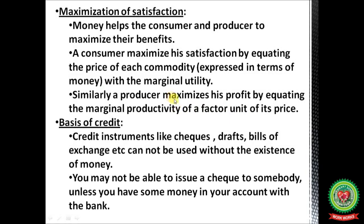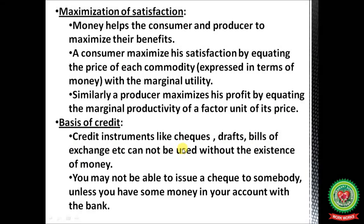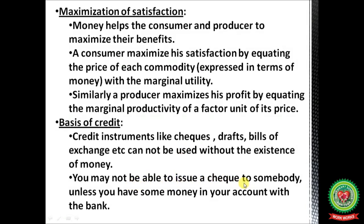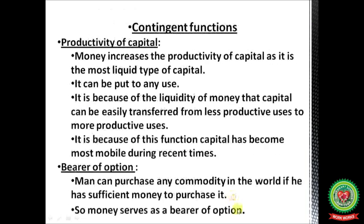Basis of credit: credit instruments like checks, drafts, and bills of exchange cannot be used without the existence of money. If there is no money in our savings or current accounts, these instruments are useless. You cannot issue a check to someone unless you have money in your bank account. Productivity of capital: money increases the productivity of capital as it is the most liquid type of capital.